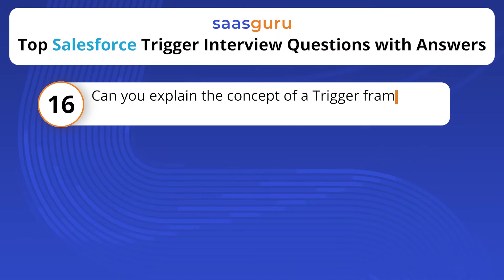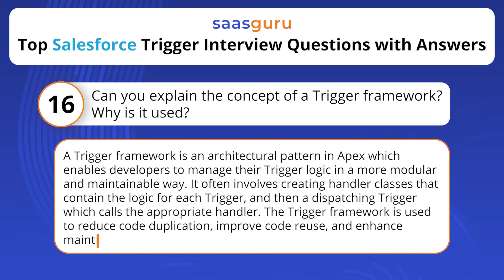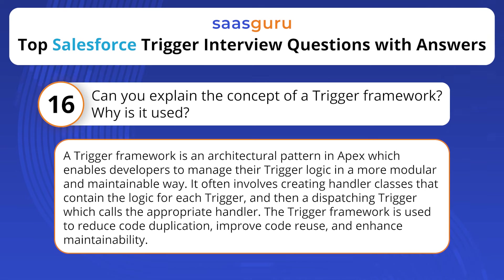Can you explain the concept of a trigger framework and why it is used? A trigger framework is an architectural pattern in Apex which enables developers to manage their trigger logic in a more modular and maintainable way. It often involves creating handler classes that contain the logic for each trigger, and then a dispatching trigger which calls the appropriate handler. The trigger framework is used to reduce code duplication, improve code reuse, and enhance maintainability.